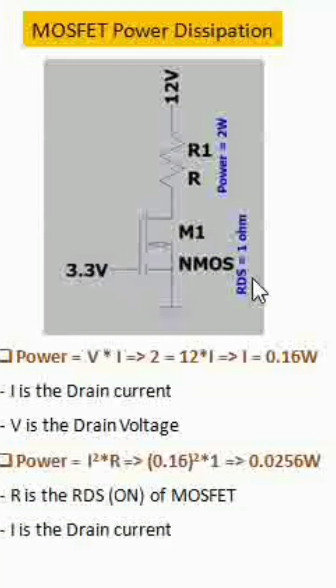Now we know power is nothing but V into I. The power of this load is given, which gives 2 equals voltage is 12 volts into I, so we are going to calculate the current that is going to pass through this resistor, which is calculated as 0.16 amperes.